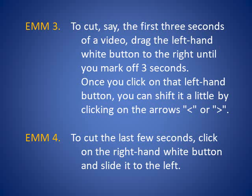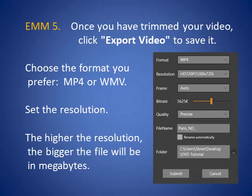To cut, say, the first three seconds of a video, drag the left-hand white button to the right until you mark off three seconds. To cut the last few seconds, click on the right-hand white button and slide it to the left. Once you have trimmed your video, click Export Video to save it, and you'll see this box.